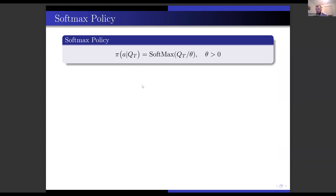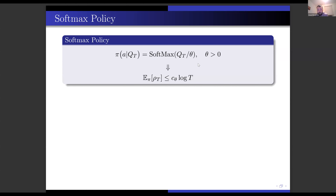Вторая политика тоже довольно понятная. Допустим, у нас есть вот эта Q-функция, и мы возьмём softmax от неё — получим некоторое распределение на пространстве действий с параметром TETA, который часто называется температурой. Для этой политики тоже выясняется, что идёт логарифмический рост регрета. Её тоже вполне адекватно использовать.